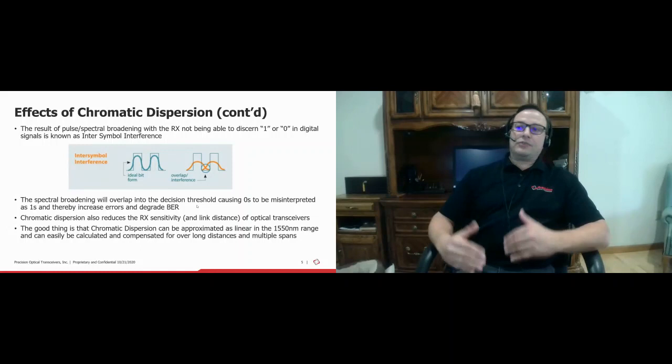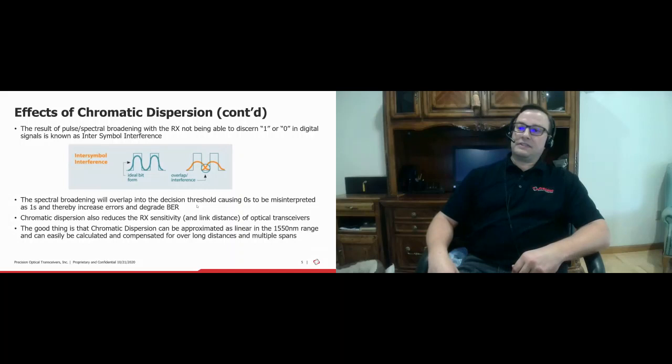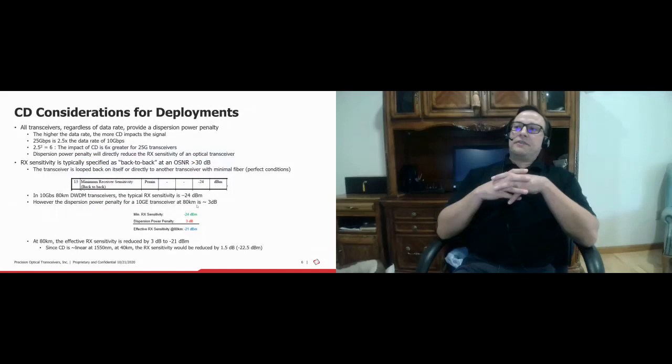Chromatic dispersion, besides increasing bit error rate, also directly reduces receive sensitivity and therefore your link distance of optical transceivers. The good thing is that chromatic dispersion, if you understand and are aware of it, you can compensate for it. You can calculate it — it's very simple as it's linear in the 1550 nanometer range. You can really manage this over long distances and multiple spans.